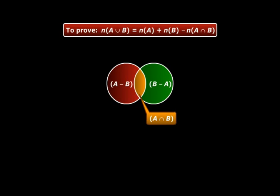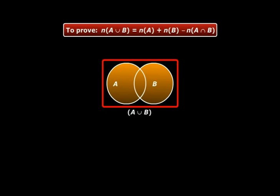And when we combine these three sets, they represent A ∪ B. This region is A ∪ B, right? So we can say that n(A ∪ B) = n(A - B) + n(A ∩ B) + n(B - A).